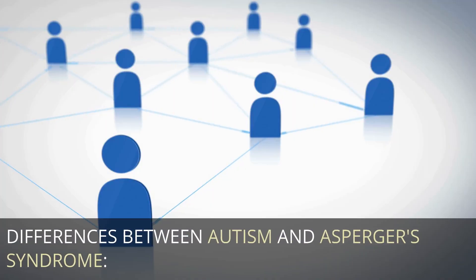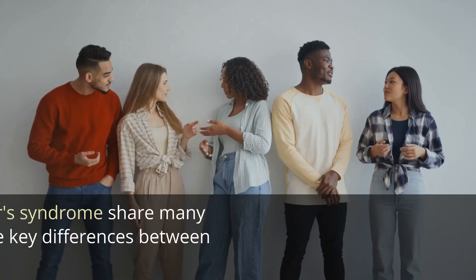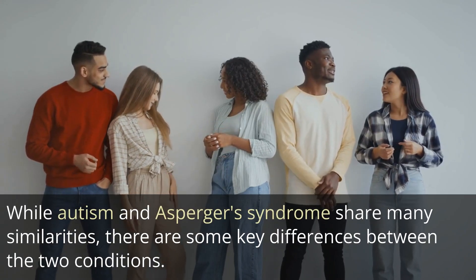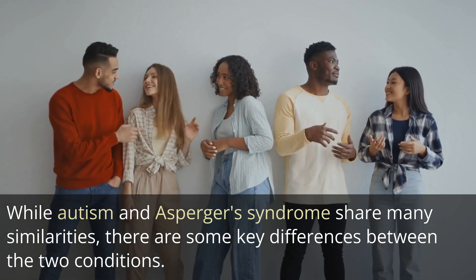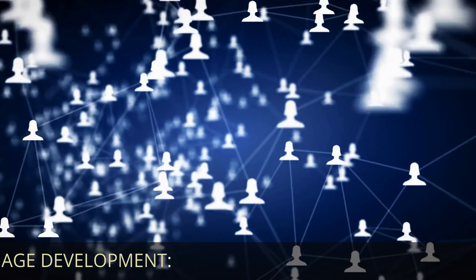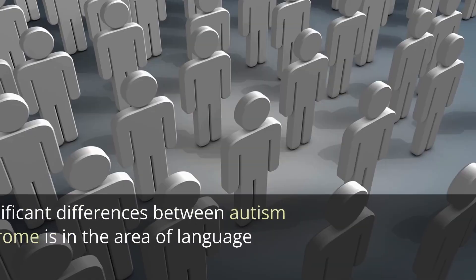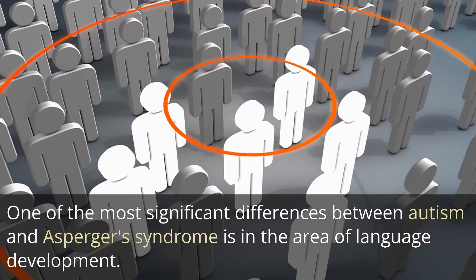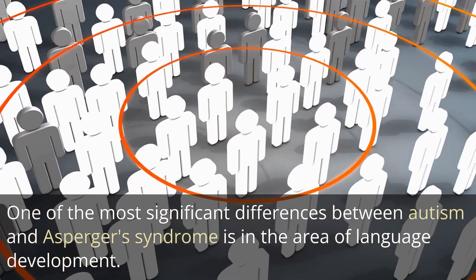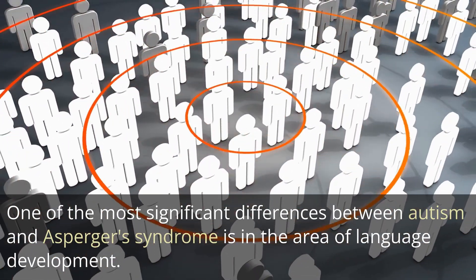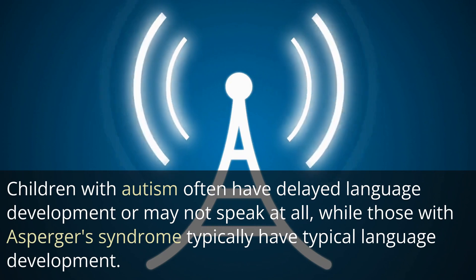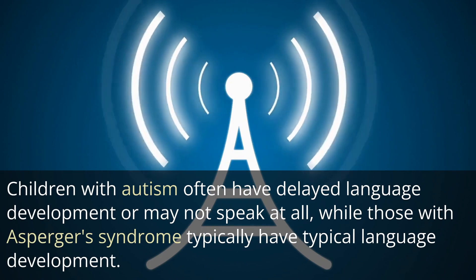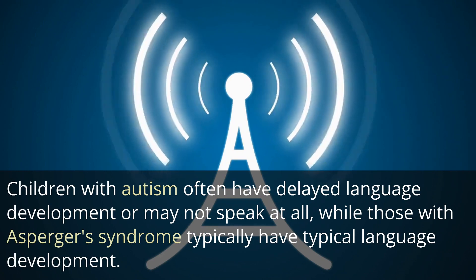Differences between autism and Asperger's syndrome. While autism and Asperger's syndrome share many similarities, there are some key differences between the two conditions. Language development is one of the most significant differences: children with autism often have delayed language development or may not speak at all, while those with Asperger's syndrome typically have typical language development.